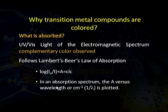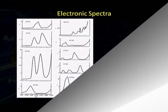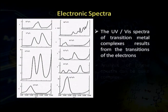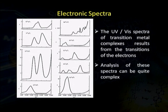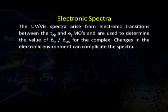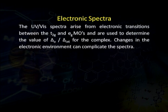In the absorption spectrum, absorbance A versus wavelength lambda is plotted in a graph. The UV visible spectra of transition metal complexes result from the transition of electrons from one orbital to another. Analysis of these spectra can be quite complex because we observe more than one peak, and these peaks may be in different regions. The UV spectra arise from electronic transitions between T2g and Eg molecular orbitals and are used to determine the crystal field stabilization energy in octahedral and tetrahedral fields.